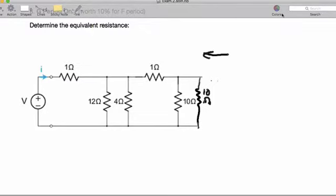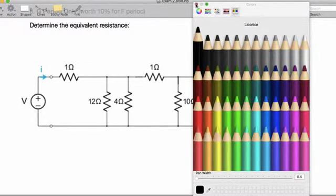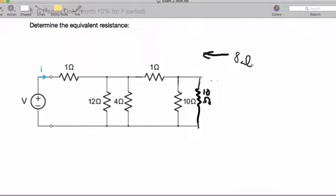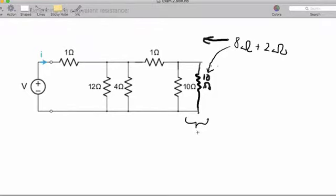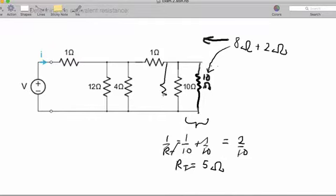Now I have these two resistors in parallel. The 8 ohm plus 2 ohm gives me 10 ohms. So I have 1 over 10 plus 1 over 10, which gives me 2 over 10 for the parallel combination. That means our total when I flip it is 5 ohms, so I'm going to combine those.